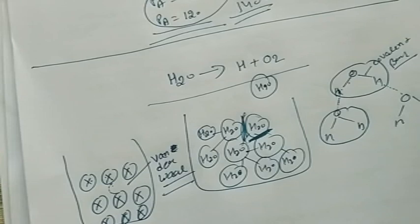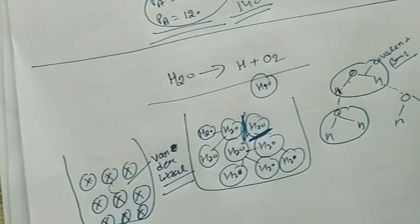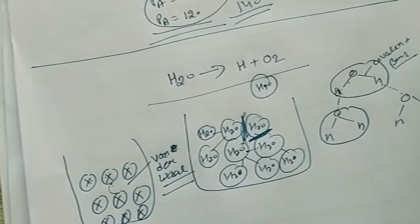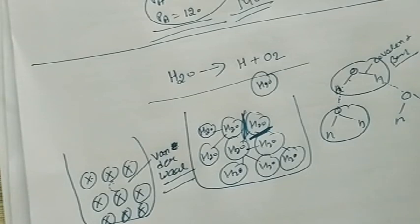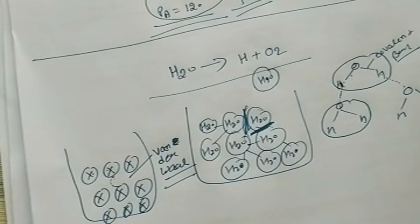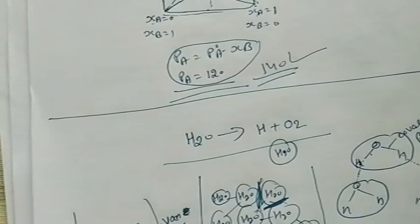Similarly, if a solution of X and Y shows negative deviation, it means the bond forming between X and Y is strong. You write: 'The solute-solvent interaction is stronger than solute-solute and solvent-solvent interactions, that is why it shows negative deviation.' If H-bond is confirmed, you can mention it; if strong bond forms, there is negative deviation; if H-bond breaks, there is positive deviation.